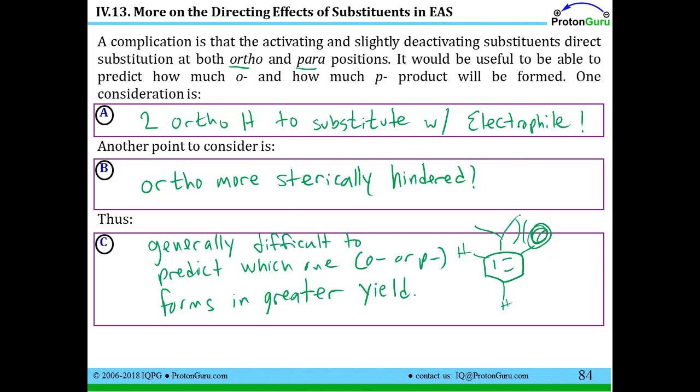So because of these competing features, we generally don't know whether the ortho or the para would be formed in the greater percent yield just looking at a reaction without knowing all the conditions and the subtleties of the reaction. Although you can probably imagine that if I have an enormous group here that we might be able to say the ortho substitution is impossible. So we'll talk about some of those special cases a little later in the lesson as well.